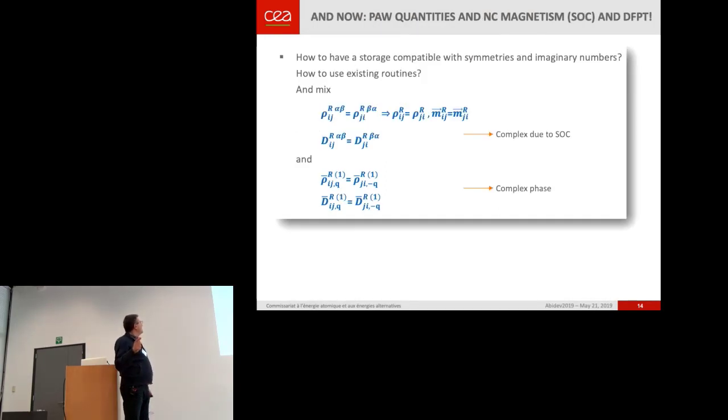But what happened now when I mixed non-collinear magnetism and DFPT? So I have to mix the two symmetries. The first one, the complex, these are complex numbers due to spin-orbit coupling. And in the second case, these are complex numbers due to the phase of the Q.